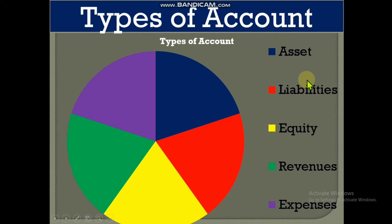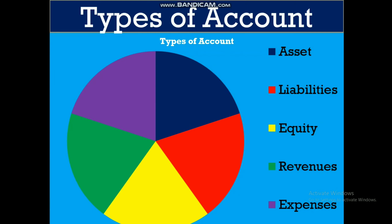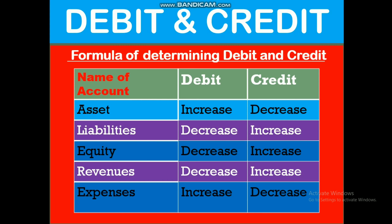Types of account — there are five types of account: asset, liabilities, equities, revenue, and expense.